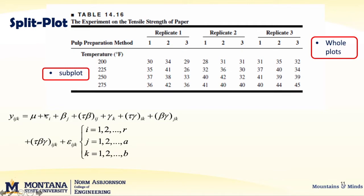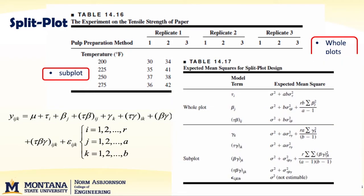Looking at the effects model, we have the overall mean, tau for the impact of your replicates, beta j for your whole plot effect, plus the interaction term between your replicate and your whole plot. That covers the whole plot section. Then we move to the subplot section: we have the subplot effect, the subplot-replicate interaction, and finally the subplot-by-whole-plot interaction. When we run the analysis, these are our model terms and expected mean squares — useful information to have at hand.